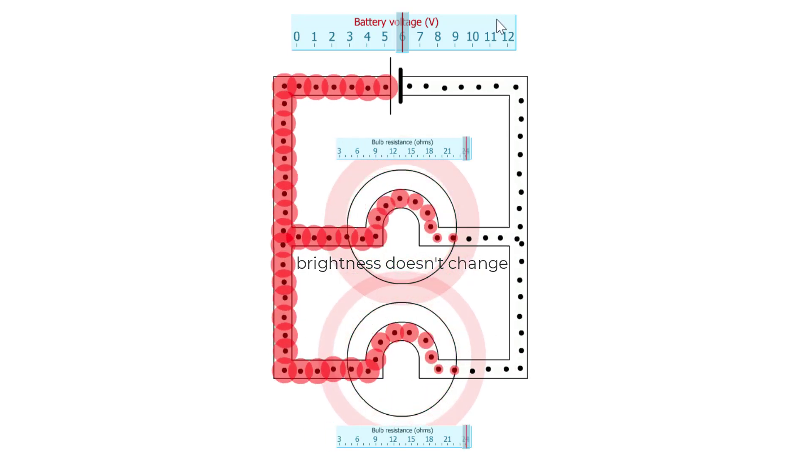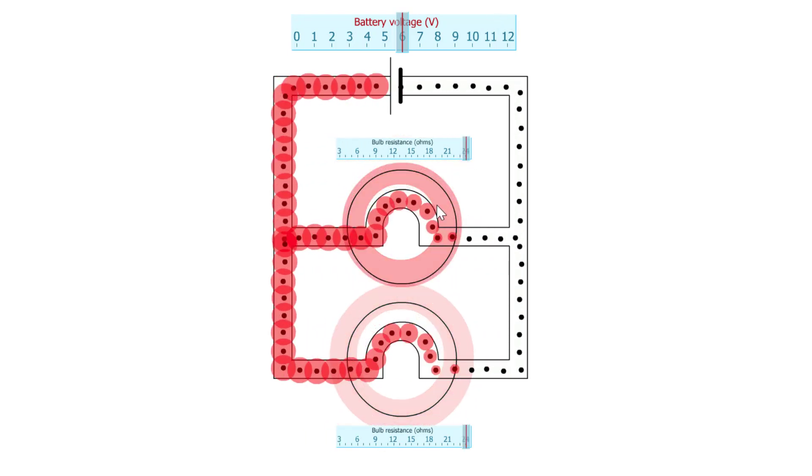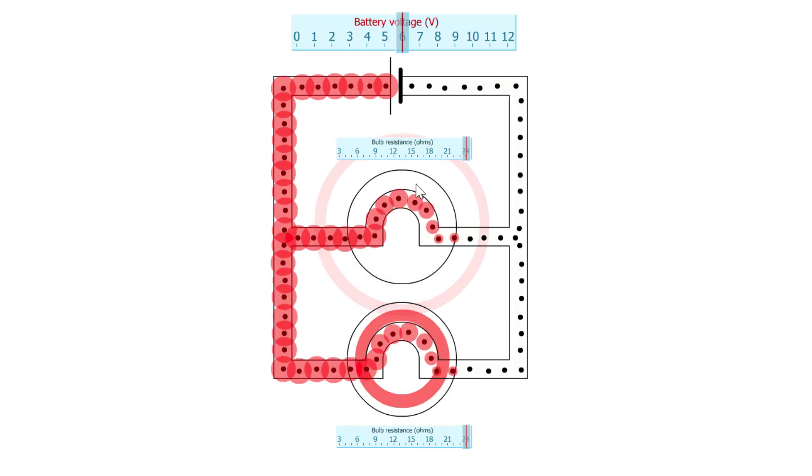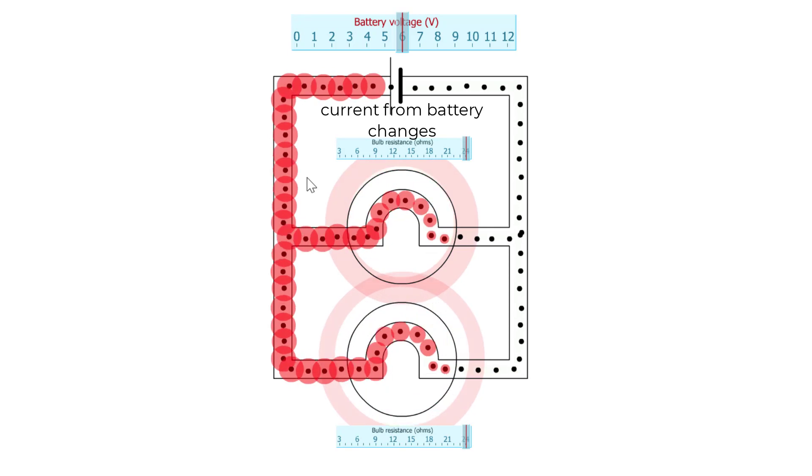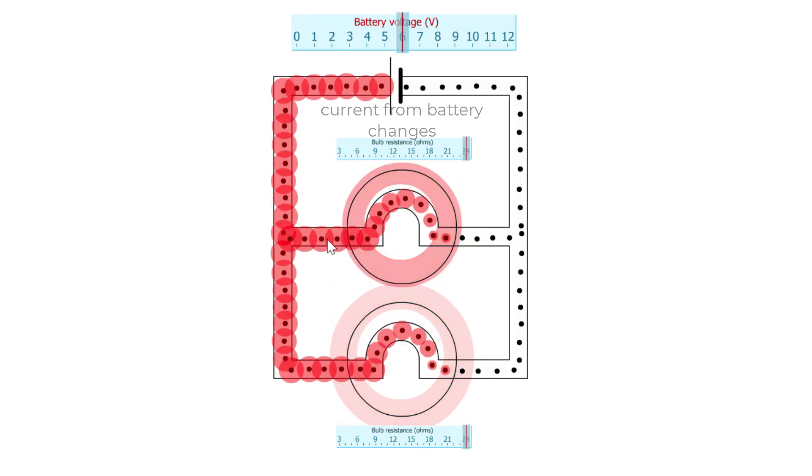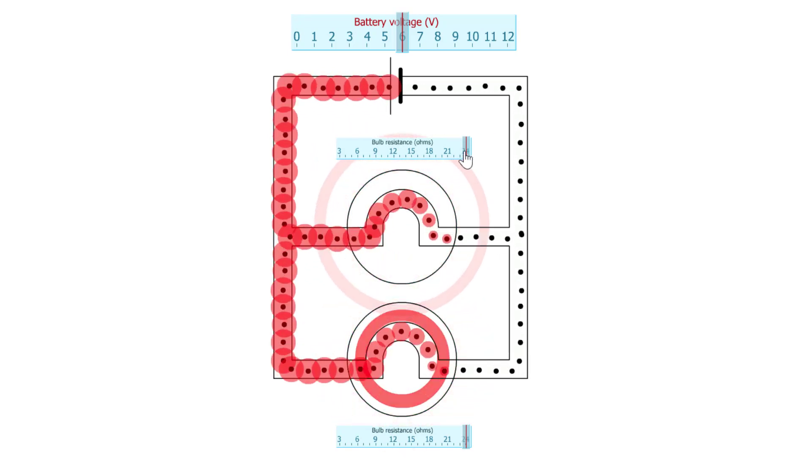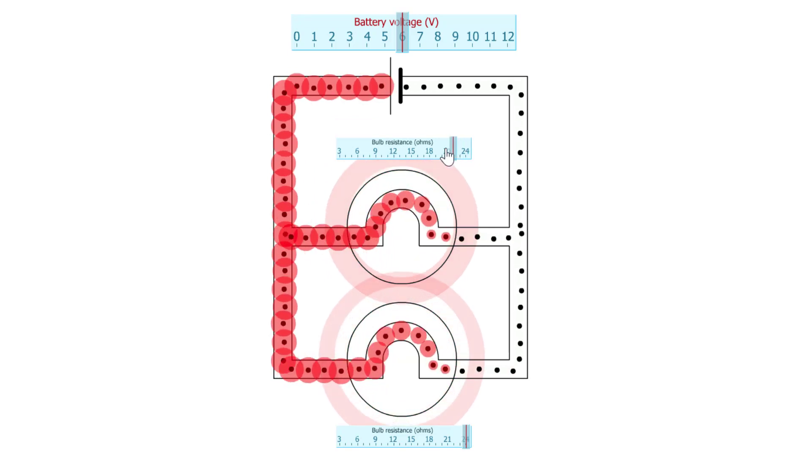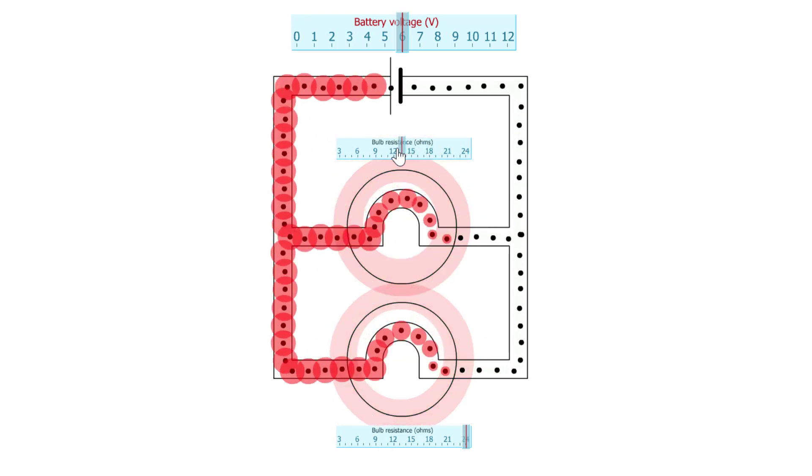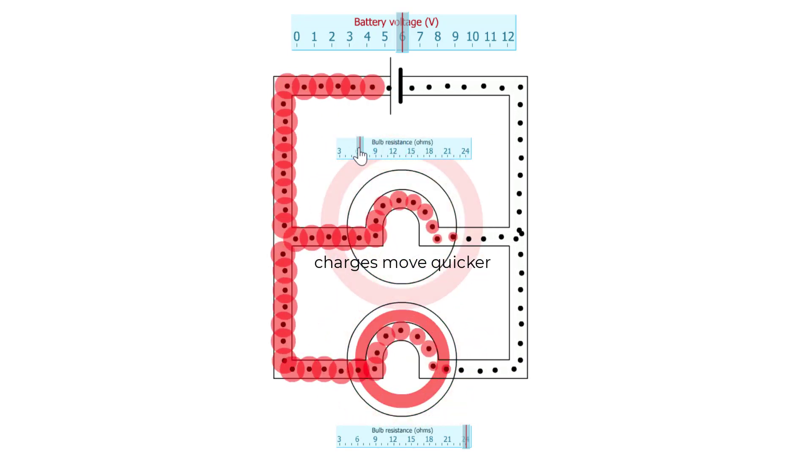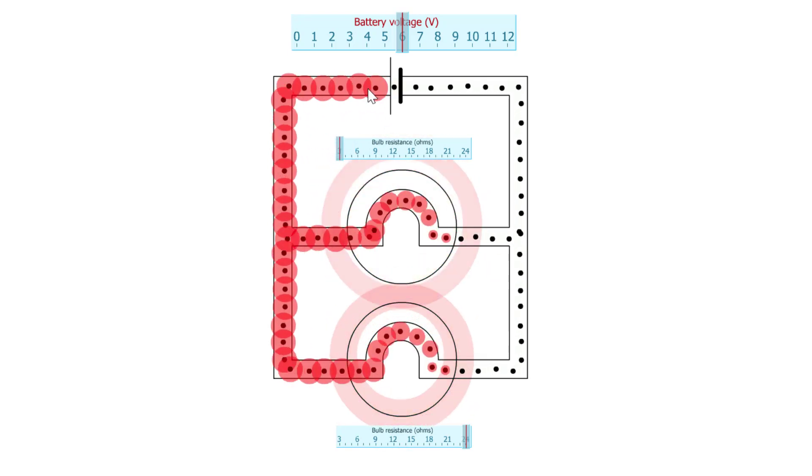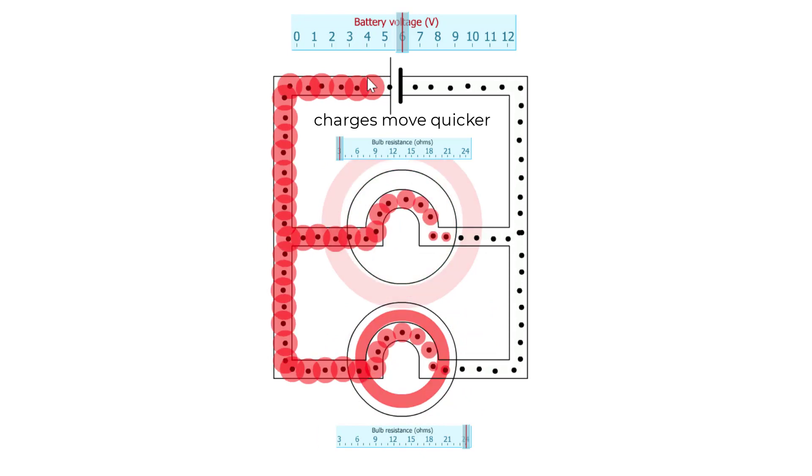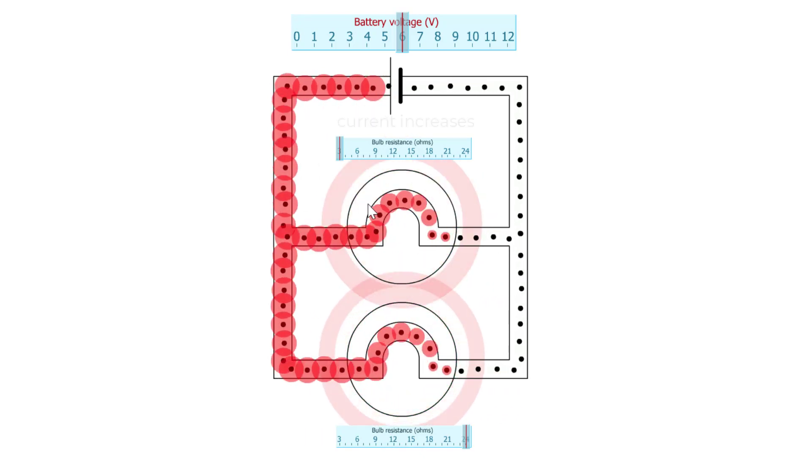If I reset everything like this then you can see that what does change is the current drawn from the battery. Watch how fast these charges move as the charges move quicker through this bulb. The charges through the top bulb are going to move quicker and quicker, and as they do the charges leaving the battery move quicker and quicker. In other words, the current increases.